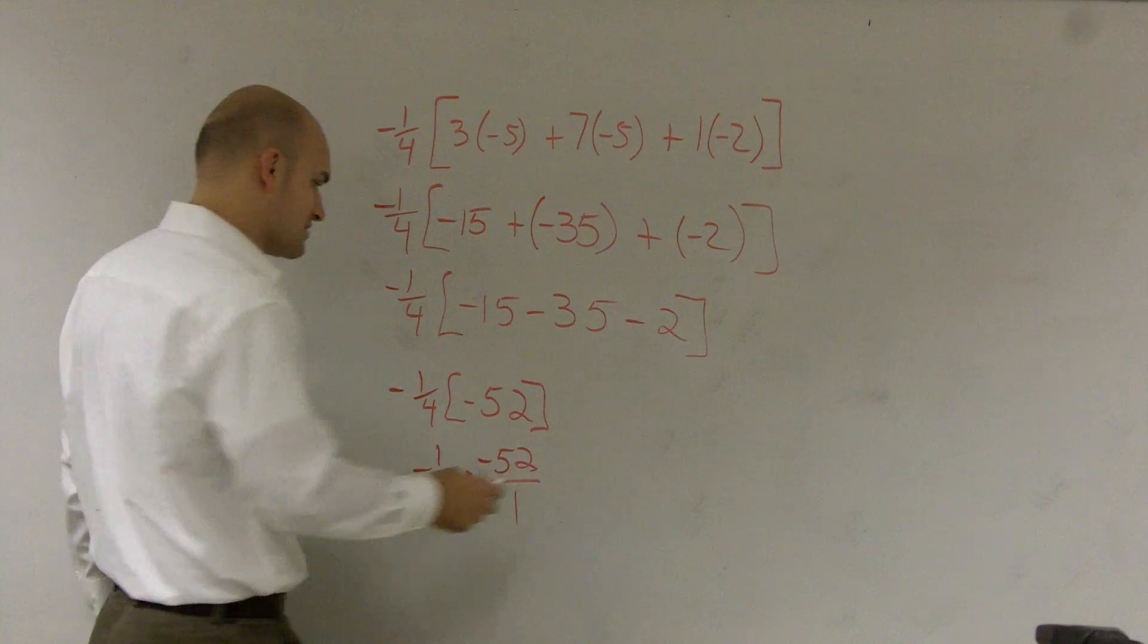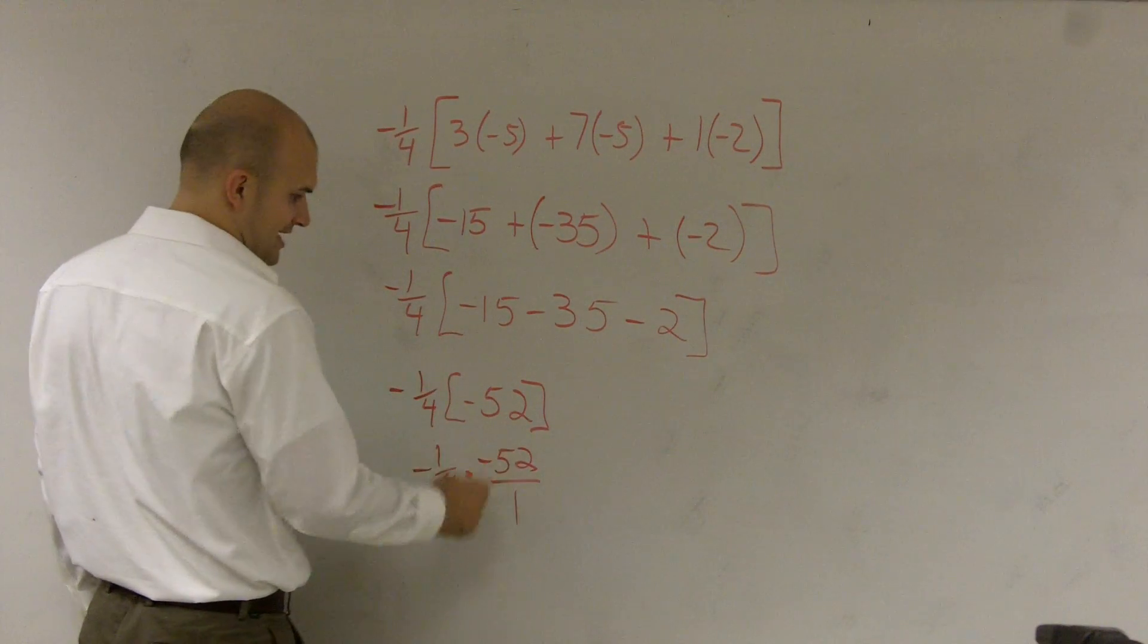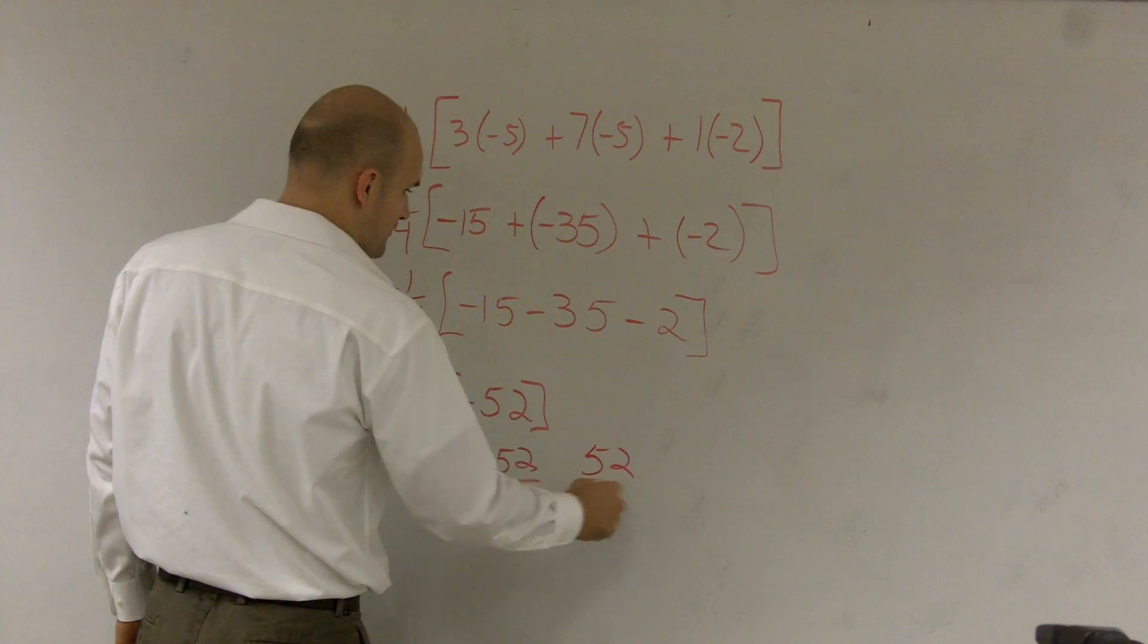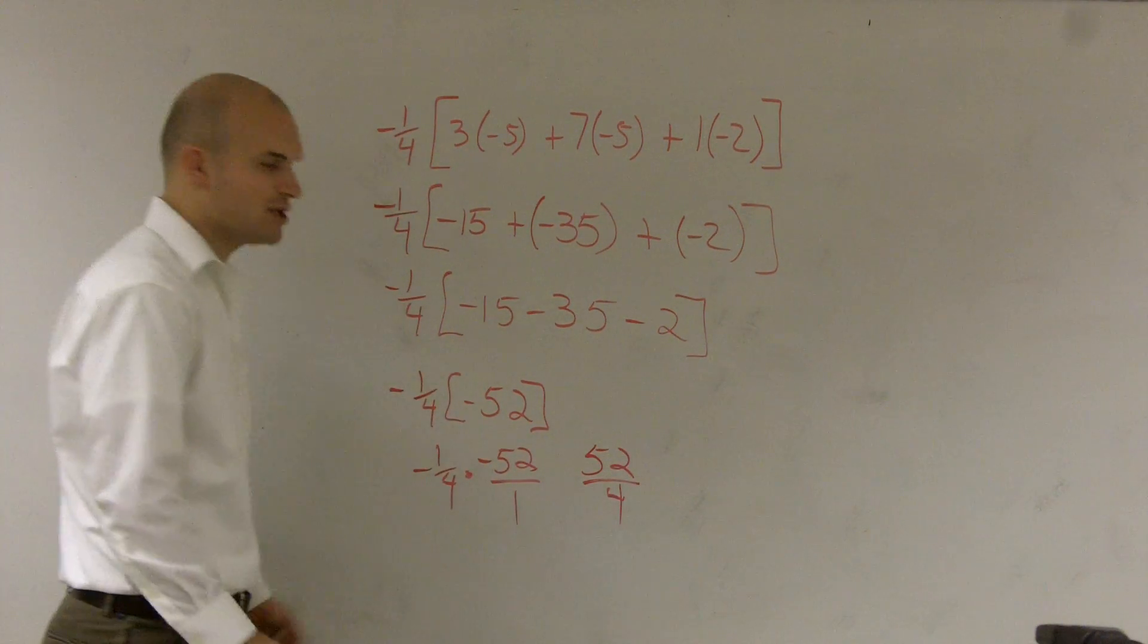Then I multiply cross. Our negatives cancel out, so I'm left with 52/4.